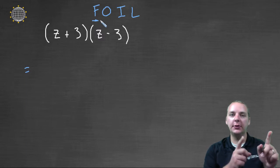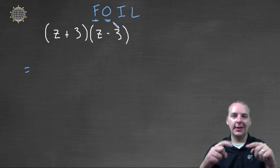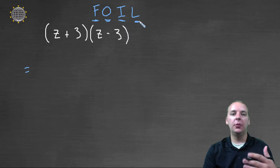F stands for the first terms, the O stands for the outside terms, the I is the inside terms, and the L stands for the last terms. That's the order in which we multiply these four different terms here.